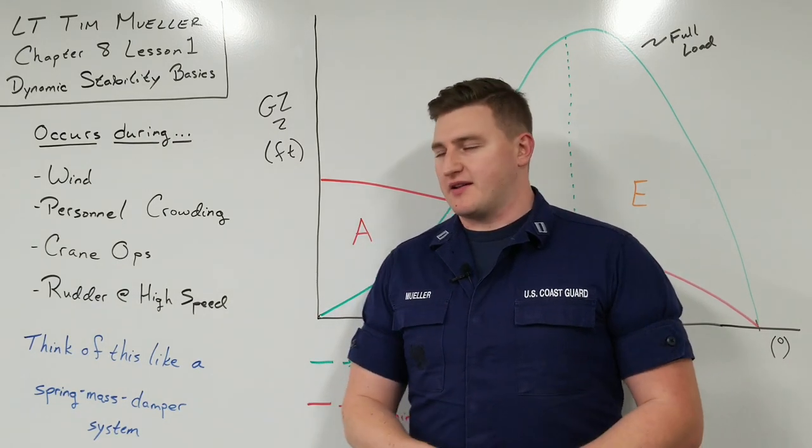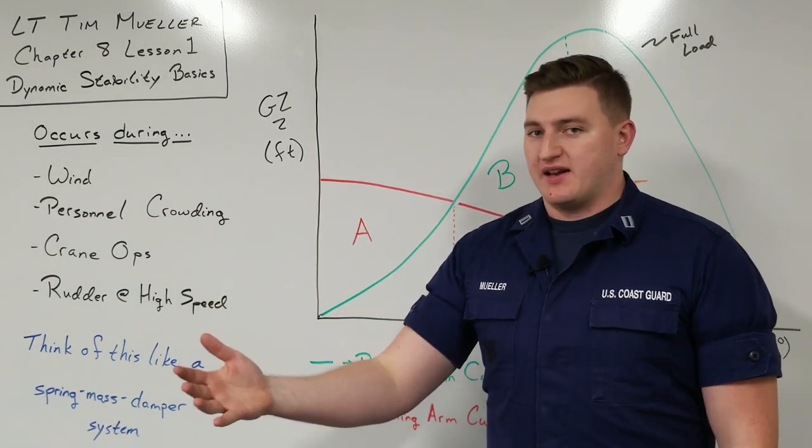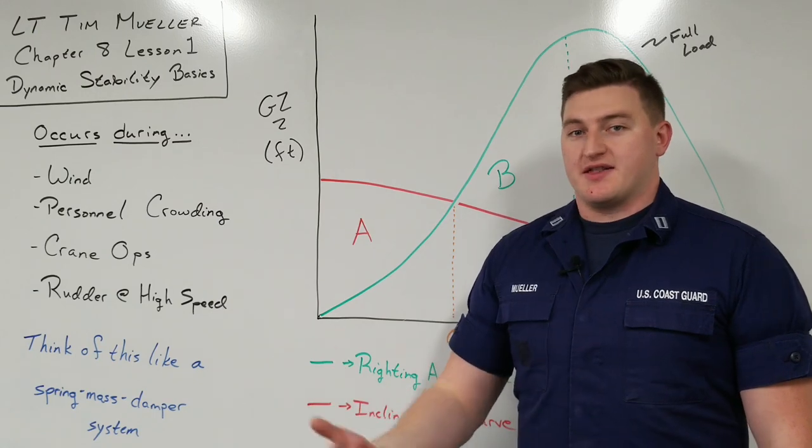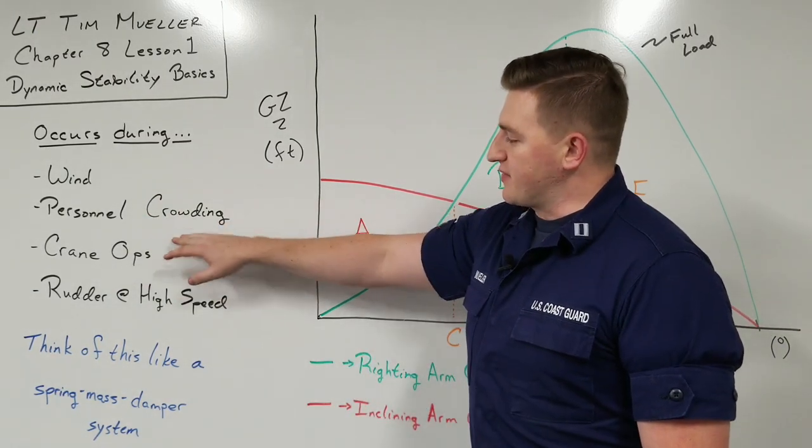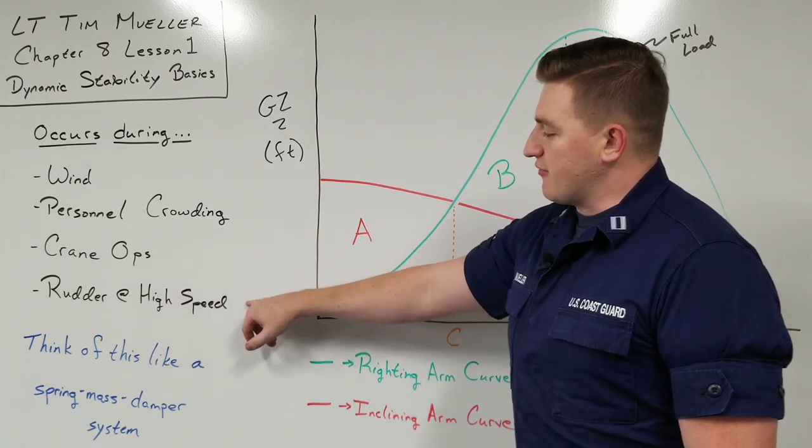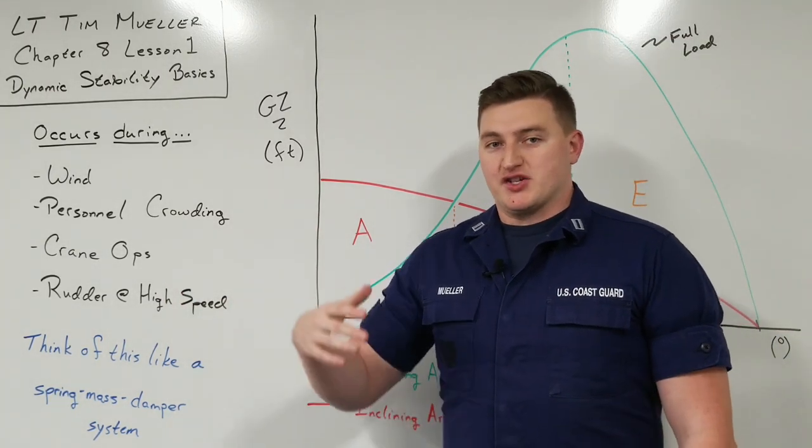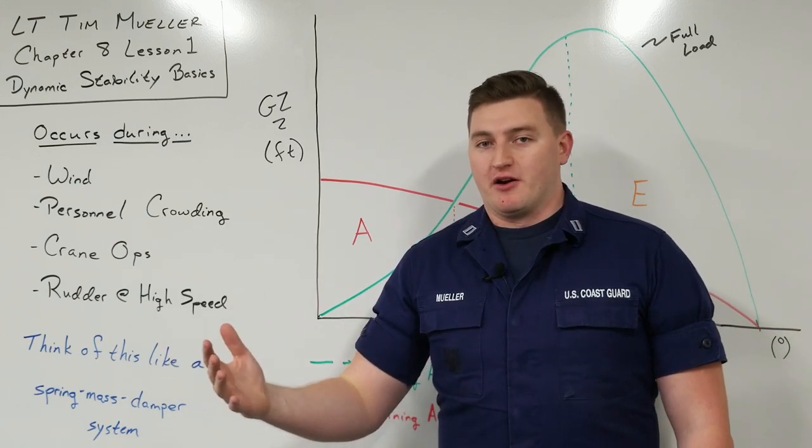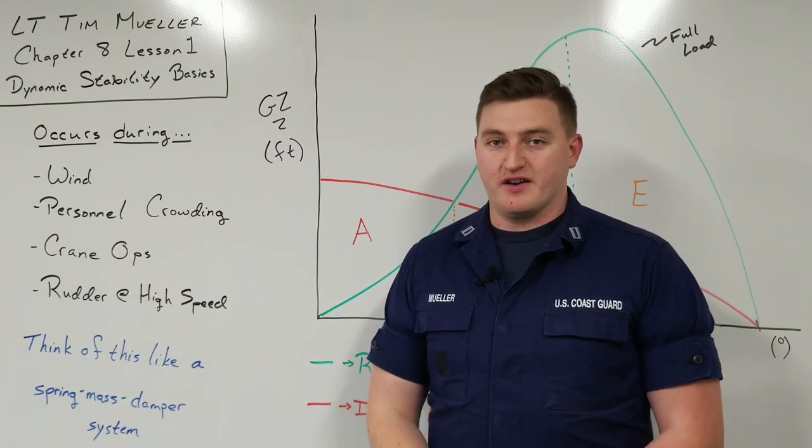Well, if you look at the left-hand side of the screen, this is not all the conditions. Anything that causes any instantaneous motion of the ship to the side has relations in dynamic stability. But we have wind, personnel crowding, crane ops, rudder at high speed, and like I said, there's several other things that can make a ship go into a dynamic stability realm. But we are going to consider these more often than anything else in these videos.